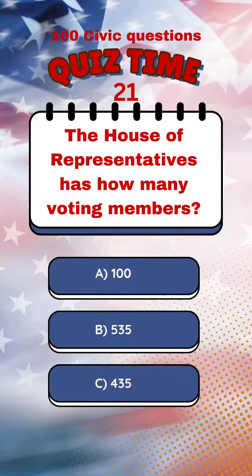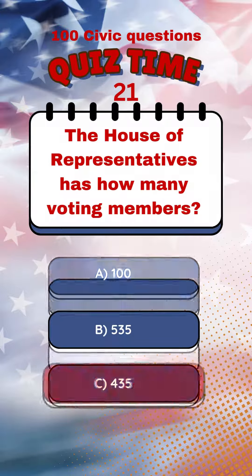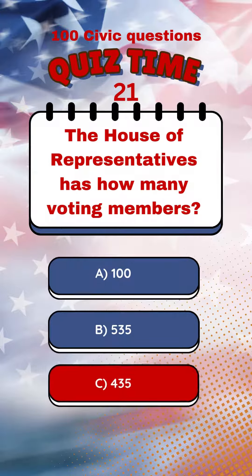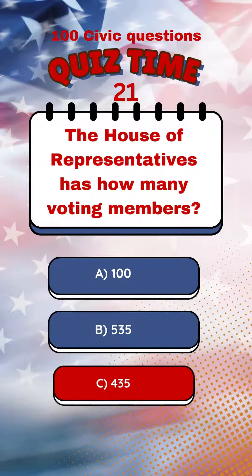The House of Representatives has how many voting members? 435.